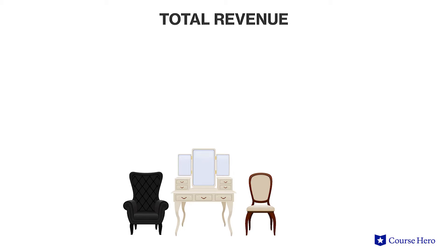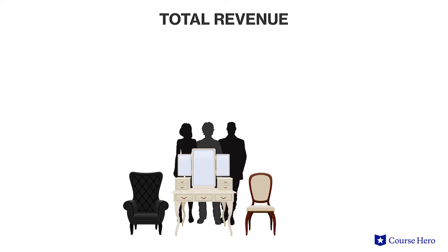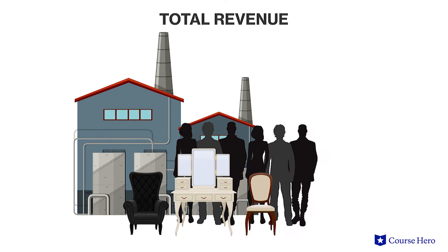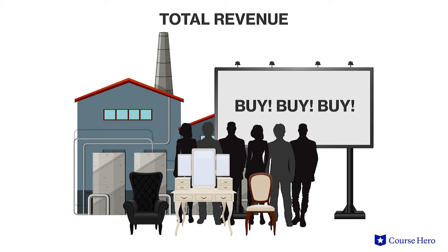The company may have high revenues from selling a few pieces of expensive furniture, but they must pay for workers' salaries, materials, a space to create the furniture, people to sell the furniture, and ways to spread word about their product. All of these activities take money away from total revenue and end up lowering potential profit for the manufacturer.